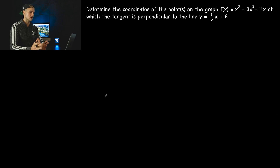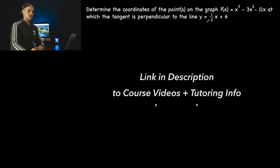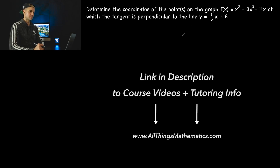Welcome back. Patrick here from All Things Mathematics, moving on to the next test question — another thinking kind of question. We have to determine the coordinates of the point or points, there may be multiple ones, on this function where the tangent is going to be perpendicular to this line: y equals one half x plus 6.